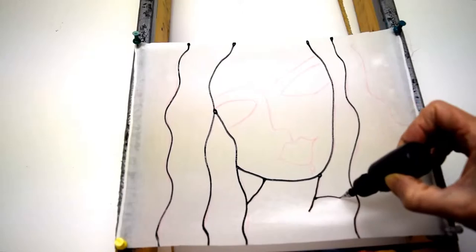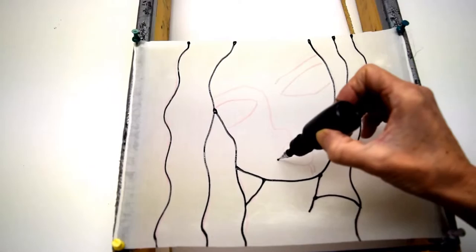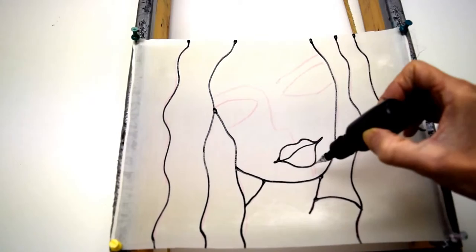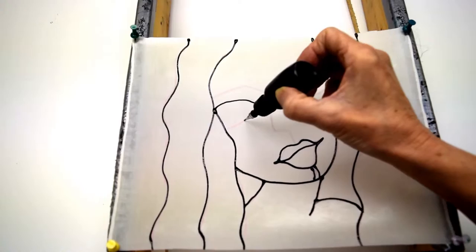The silk is suspended on a frame that's about two and a half inches deep, so you can see it's not touching anything. This is my faces series, and once I have finished drawing the gutta I need to let it dry.